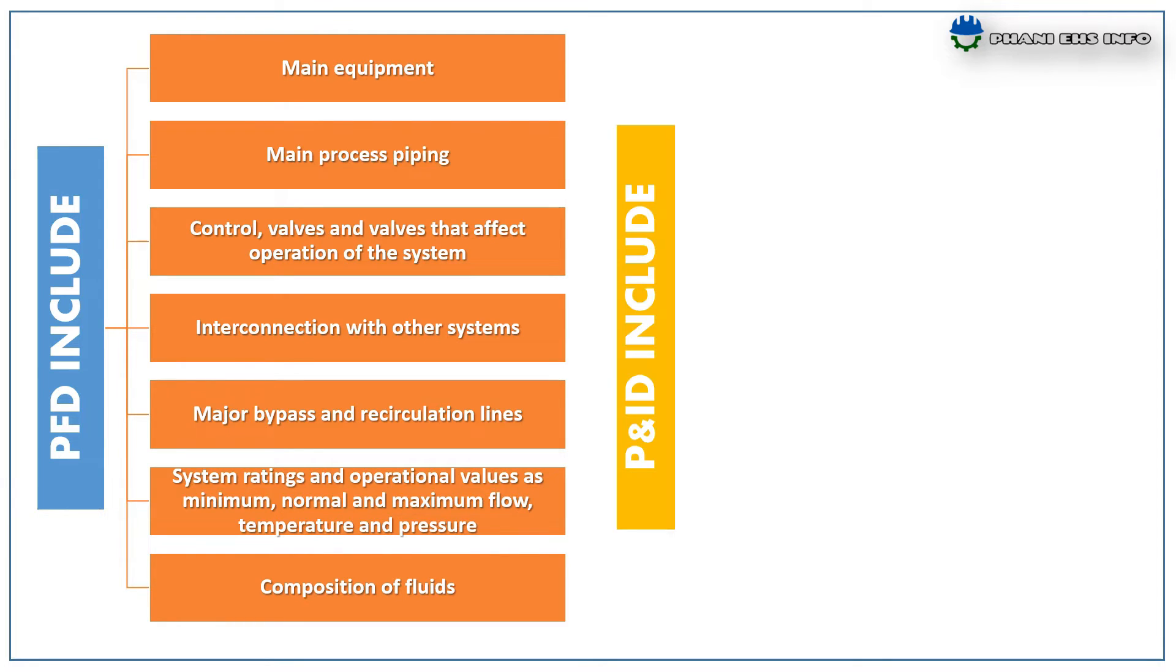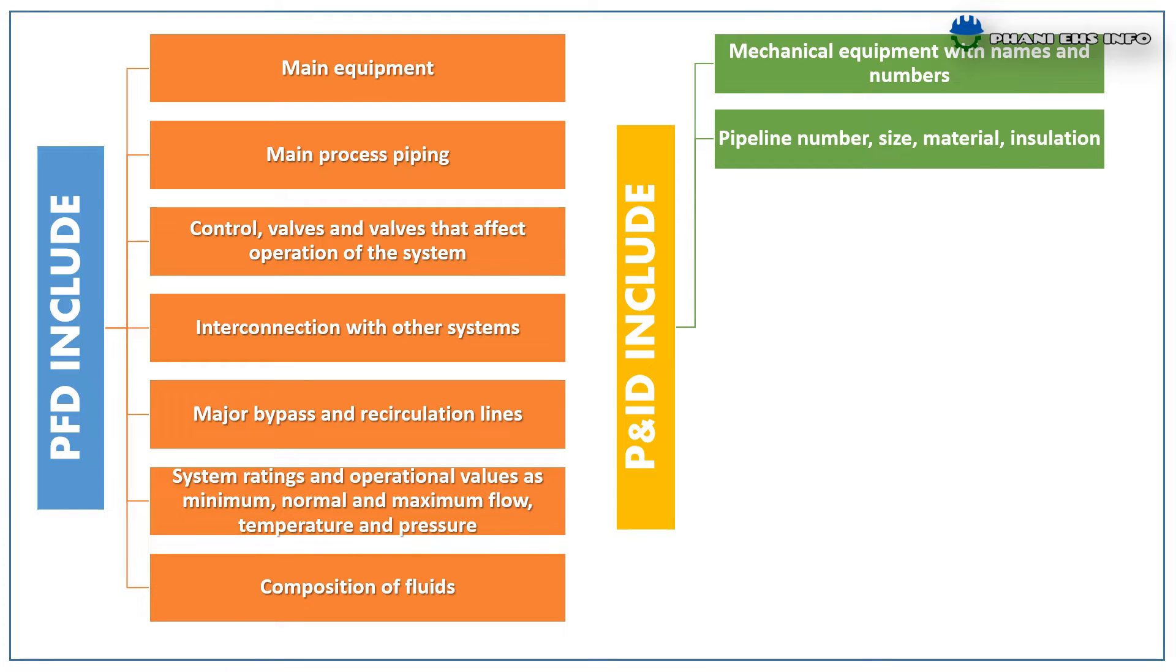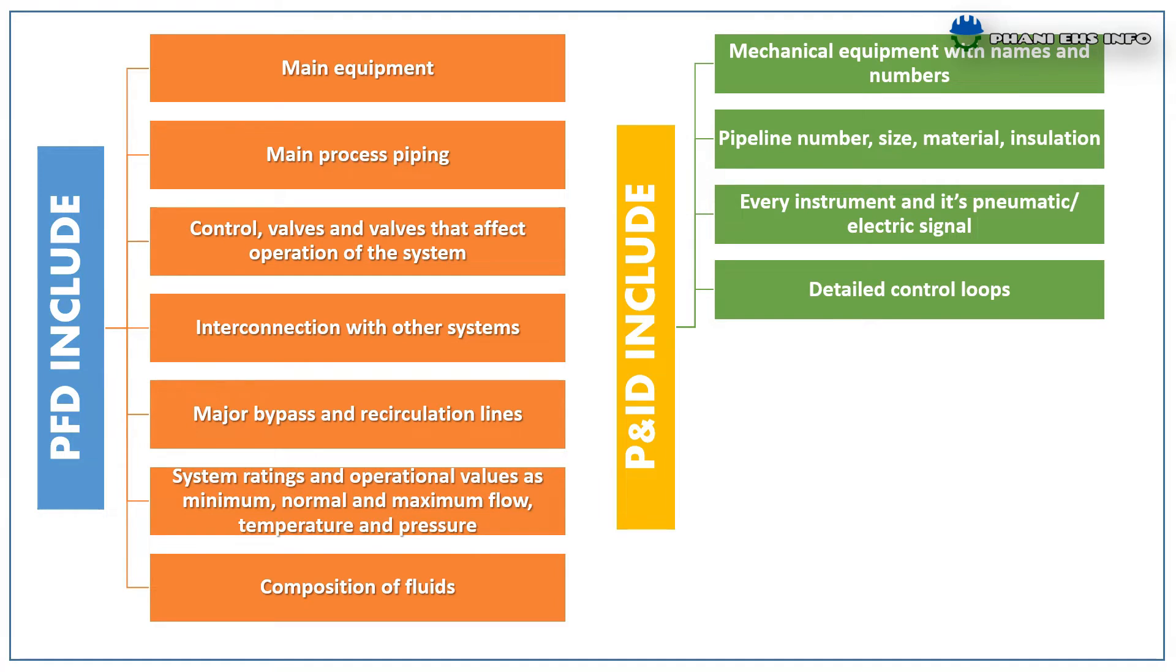And in P&ID include mechanical equipment with name and numbers, pipeline number, size, material, insulation, ventilation, every instrument and its pneumatic or electrical signal, detailed control loops, utility lines, drain and vent lines, sampling lines, etc.